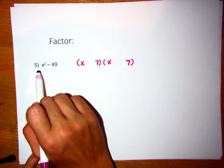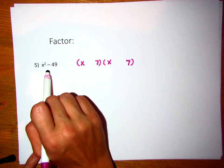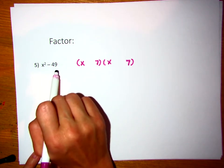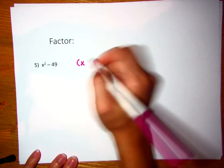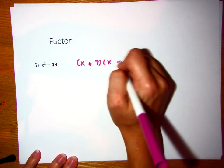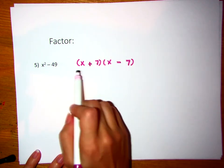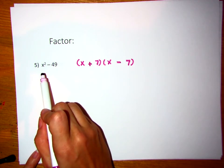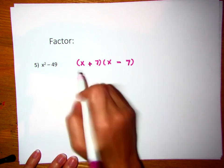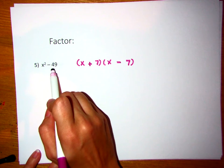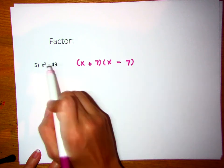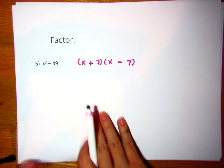In order to get that middle term to go away, because usually we have x squared plus some kind of number x, and then a minus or plus another number, we have to have opposite signs. If we foiled this back out, it would bring us right back here. So we take the square root of the first term, that's x. Square root of the second term, that's 7. One is addition, one is subtraction.